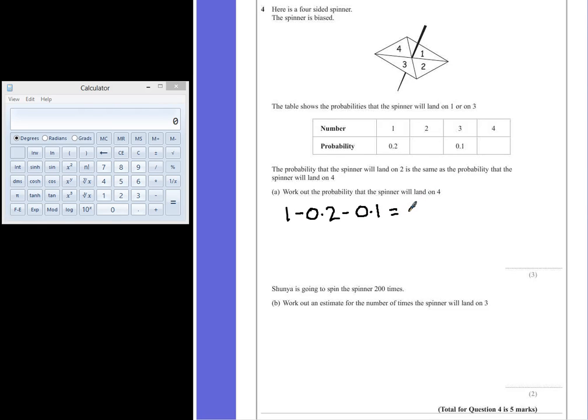And in this case that gives us 0.7. The question also tells us that the two missing probabilities are equal to each other, which means they are both exactly half of this value, 0.7. So if we divide 0.7 by 2, we find out that the probability for 4 is going to be 0.35. It's the same for the probability for the number 2.